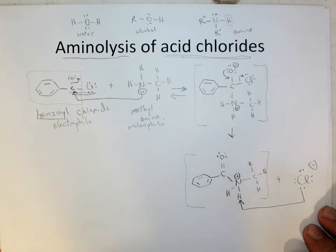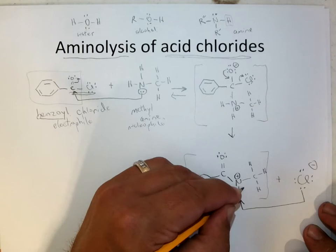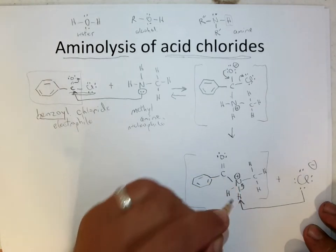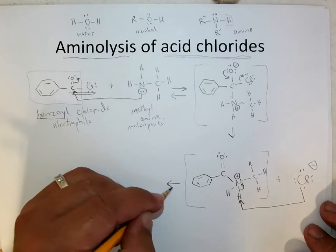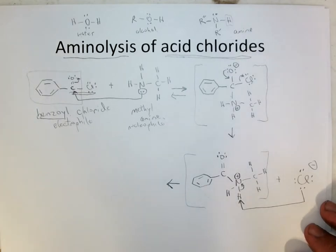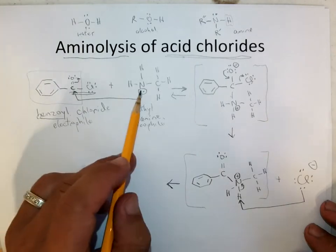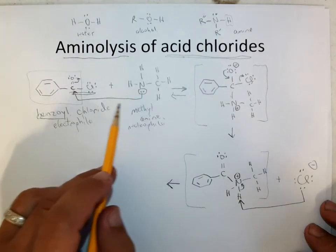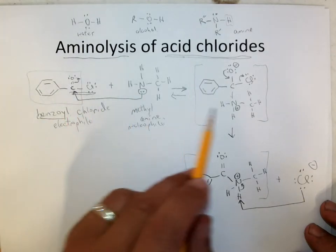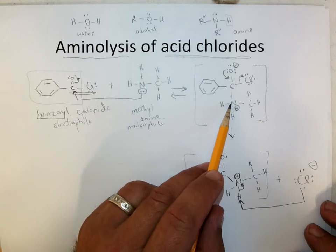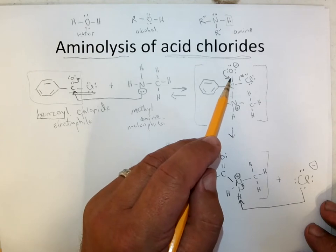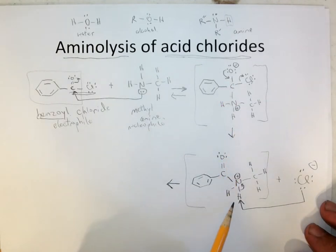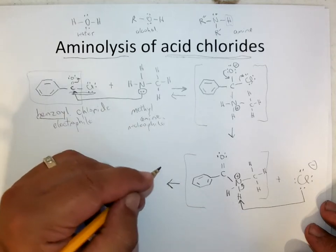So then the lone pair on the chloride goes and grabs one of the H pluses off the nitrogen. The bonding pair becomes the lone pair. And I've said that a few times. The more of these mechanisms I do, the more I see the similarities. So the first step nucleophilic attack on the carbonyl to form the famous tetrahedral intermediate. The chloride leaving group leaves, regenerating the carbonyl. Then this intermediate just needs to be deprotonated by the chloride. So minus HCl.